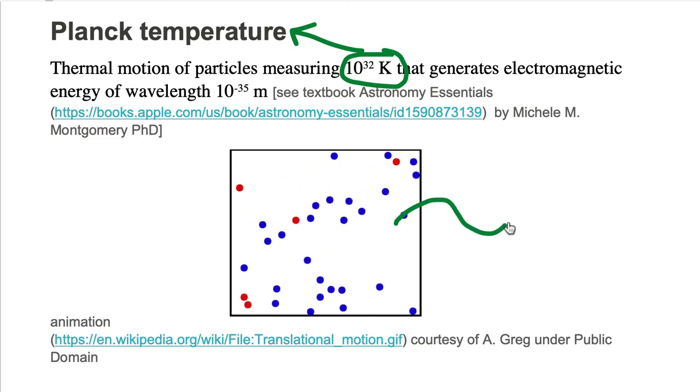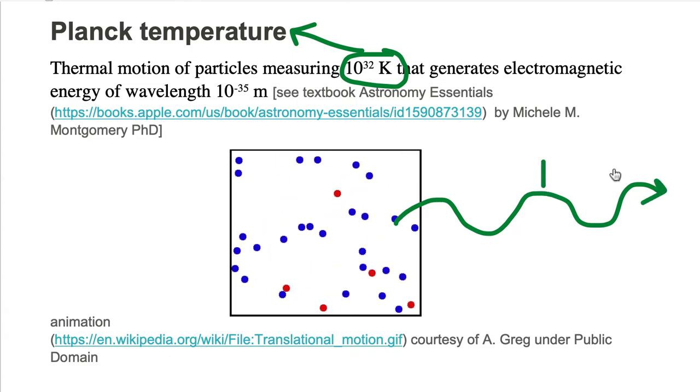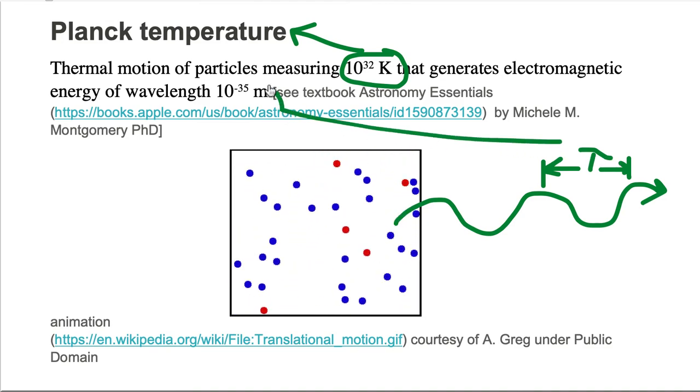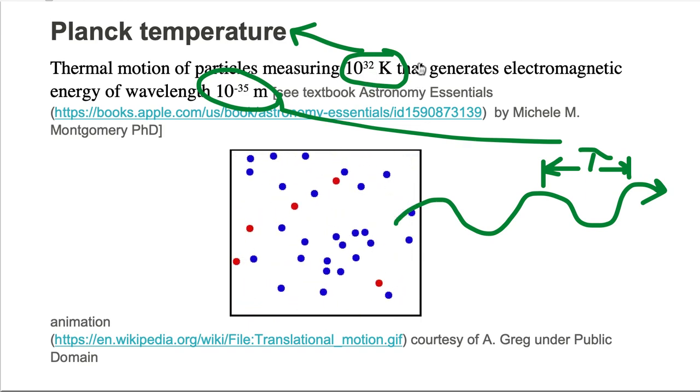Electromagnetic energy is denoted by this wave. If we measure the length of the wave, and if that length measures 10 to the minus 35 meters, then the particles must be moving fast enough that the temperature we measure is 10 to the 32 Kelvin.